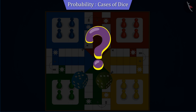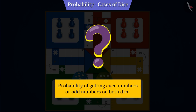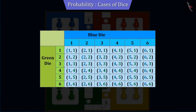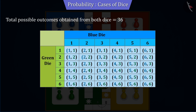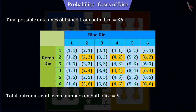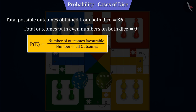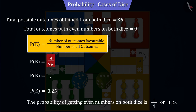Can you tell the probability of getting an even or an odd number on both dice to move the token forward? We saw that rolling both dice together gives 36 possible outcomes. From those, there are a total of 9 outcomes having even numbers on both dice. Therefore, the number of favorable outcomes will be 9. So, the probability of getting even numbers on both dice using the probability formula is 9 by 36 or 0.25.